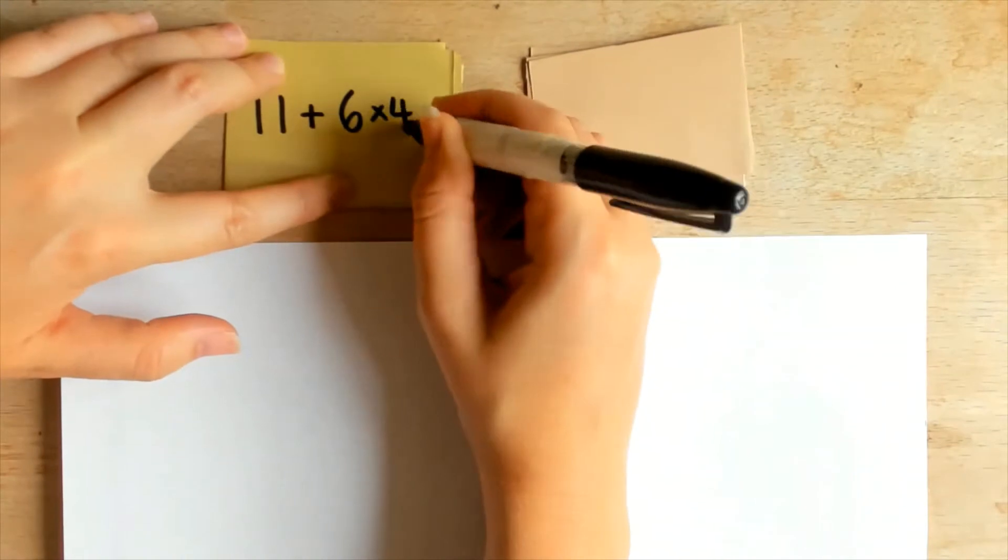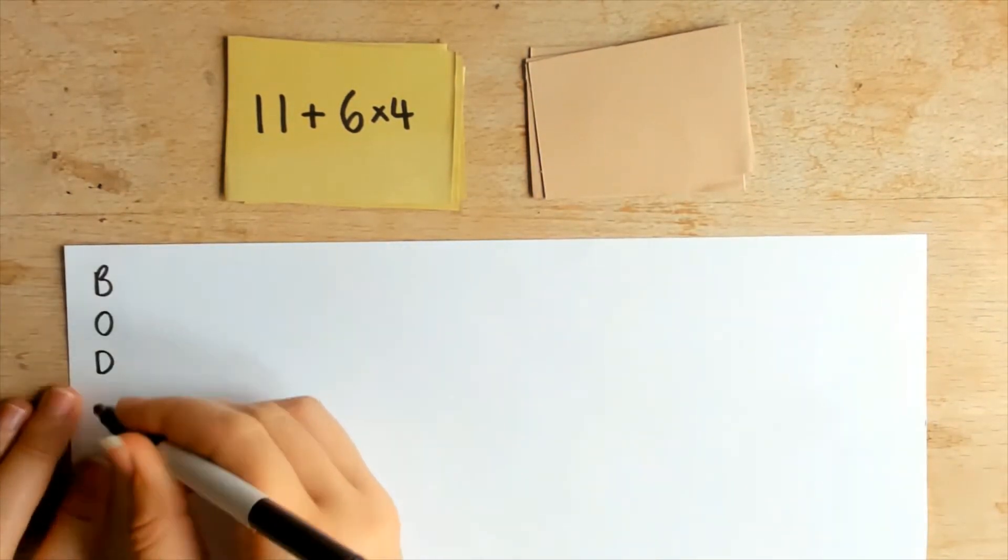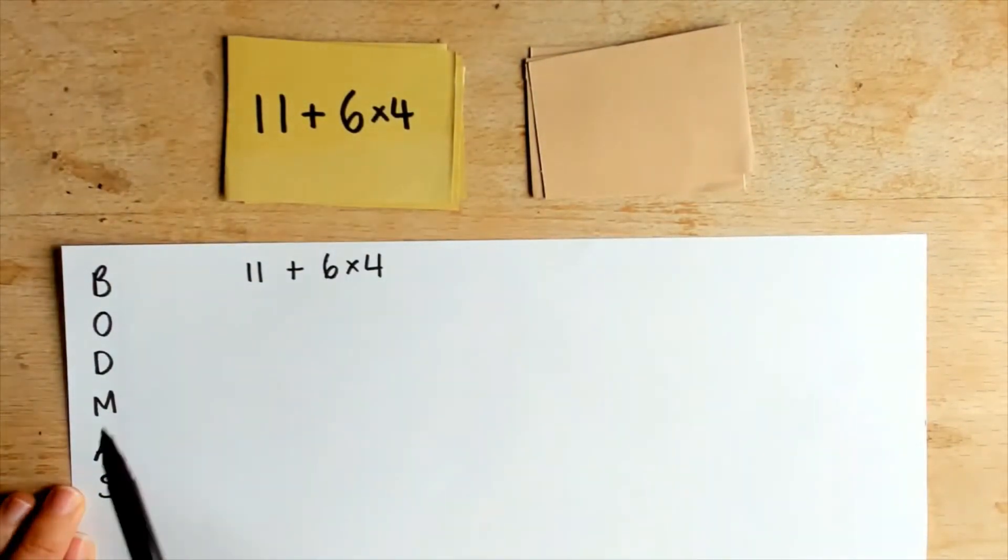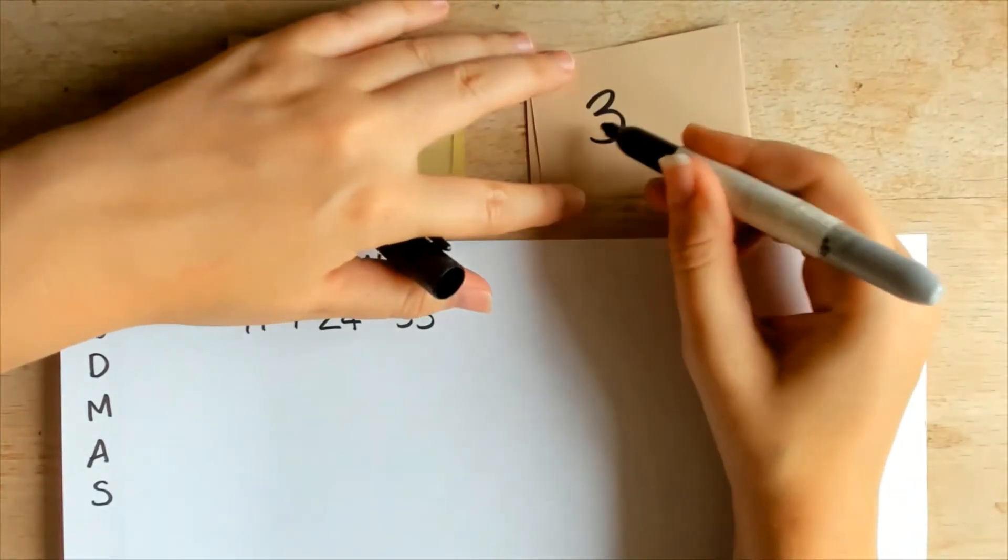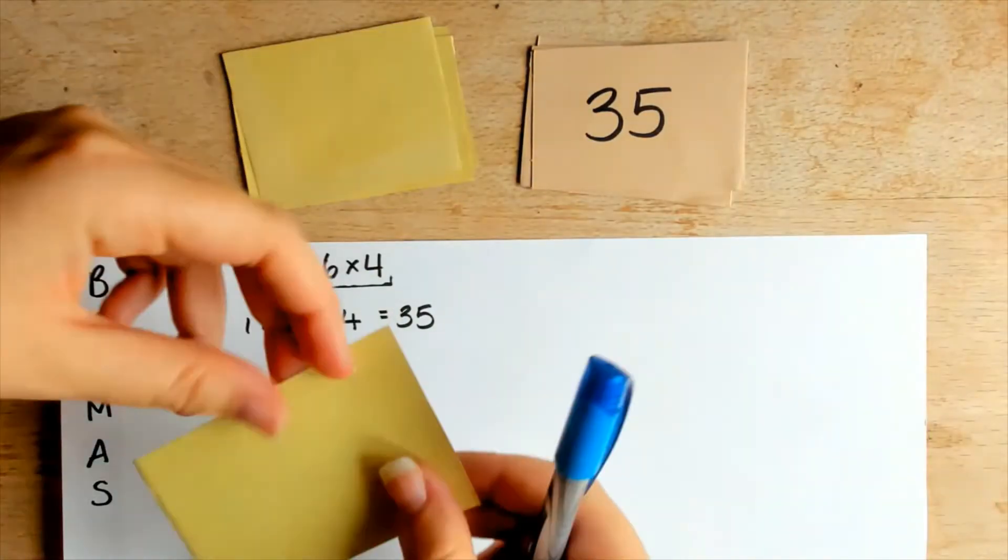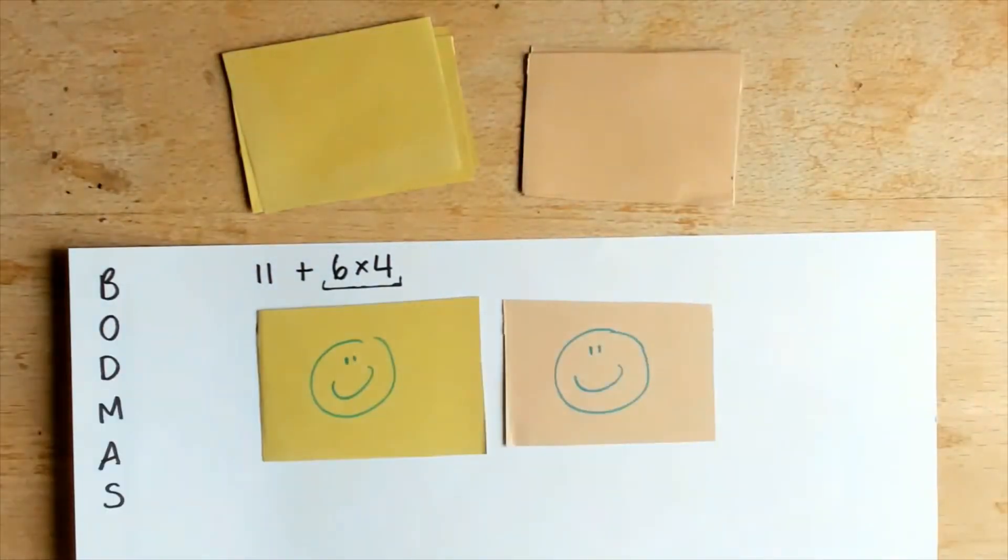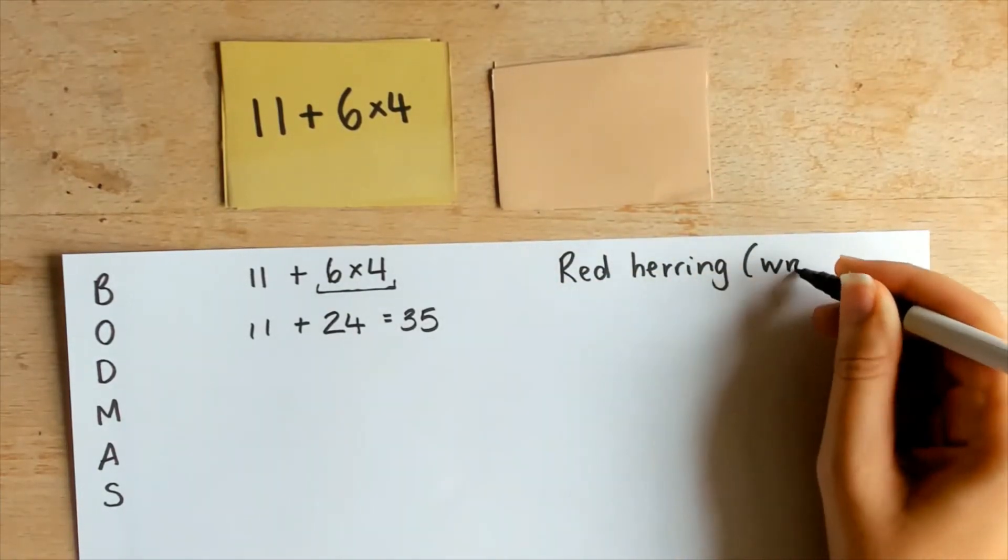You can extend this activity by asking children to create a tricky BODMAS matching card game. Children must write a calculation on one card and then the correct answer on a different card. Use a symbol or number to show these cards are a matching pair. Then create a red herring card. This should have the answer children who do not follow the correct order of operations would choose.